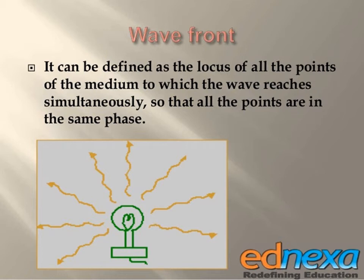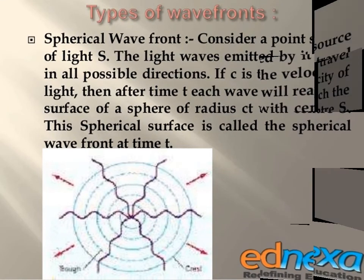The wavefront is the locus of all the points of the medium reached by the wave simultaneously, so that all the points are in the same phase. There are different types of wavefronts.